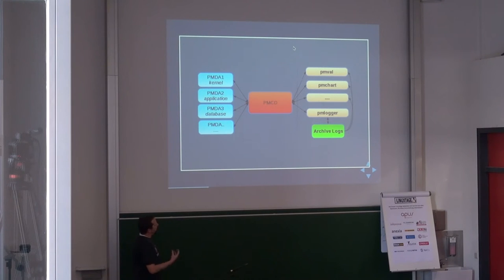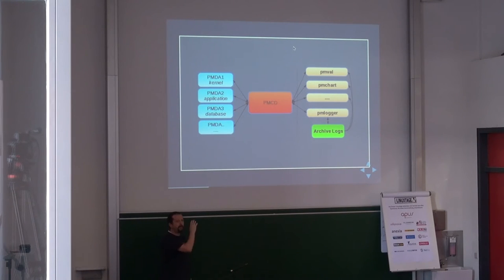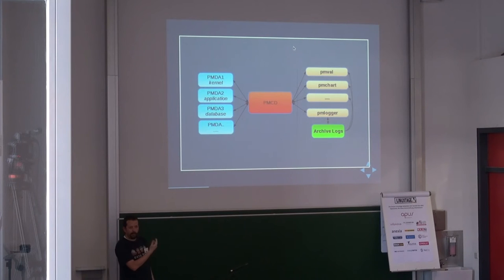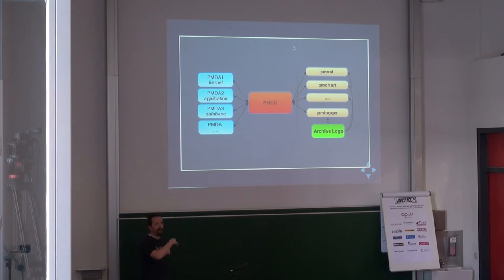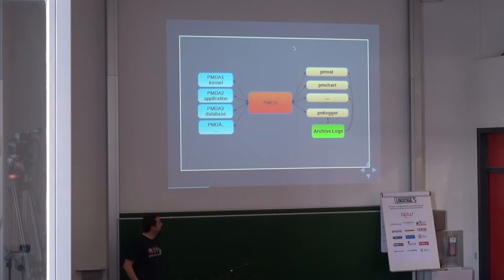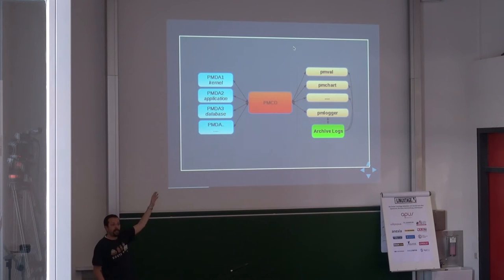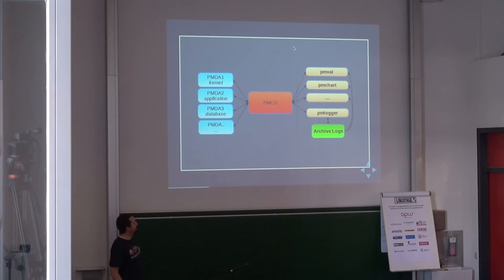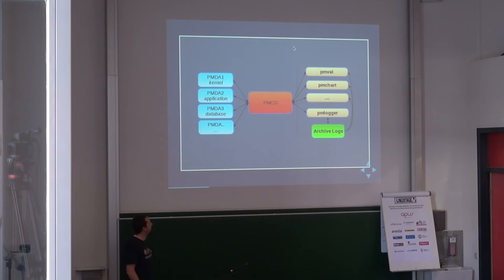One important client shipped as part of Performance Co-Pilot is PMlogger. PMlogger is a service which fetches metrics and stores them in files so you can later look at historic data, see how it behaved, and go back in time to analyze the data. Most tools shipped by Performance Co-Pilot can work on live data by querying PMCD directly, or they can be told to work on an archive.